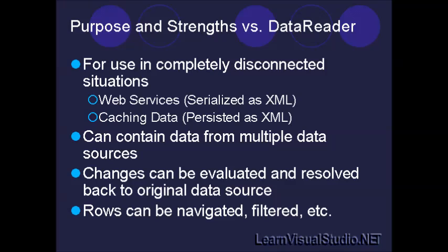A data set can contain data from multiple data sources, unlike data readers, so you can have a table that comes from database A, a table that comes from database B, maybe another table constructed purely from scratch, and yet a fourth table that comes from a spreadsheet or some other data source. The neat thing about it is that you can also connect those disparate tables together through the use of the data relation, which we'll talk about in just a moment.